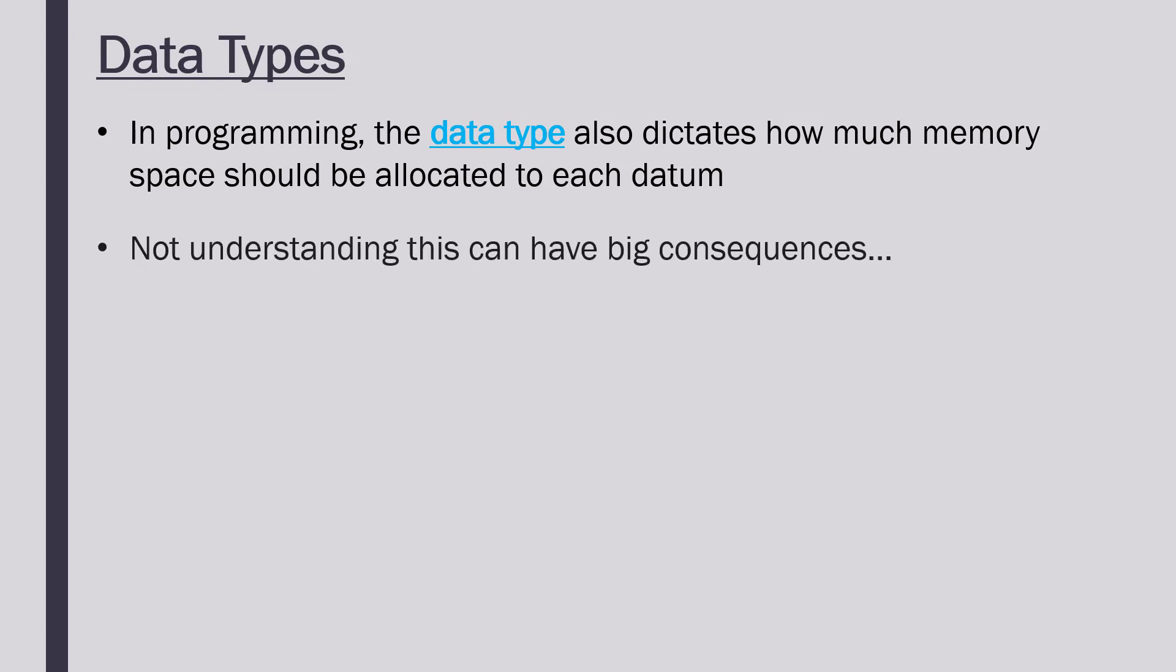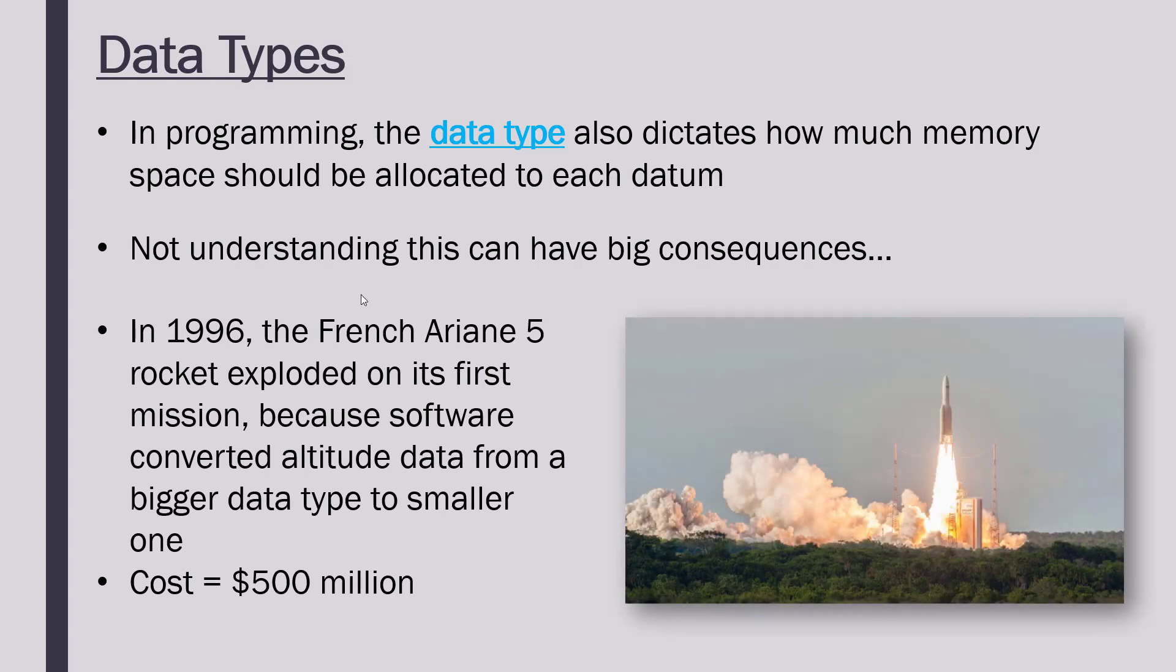As an example to illustrate this, not understanding the difference between data types can have big consequences. For example, this French rocket back in 1996 exploded on its first mission. It was a billion dollar program because what happened was the computer tried to convert the altitude data of the rocket from a bigger data type which takes up lots of space to a smaller one, so it's trying to cram loads of memory space into a smaller one by converting data types and it just couldn't handle it.